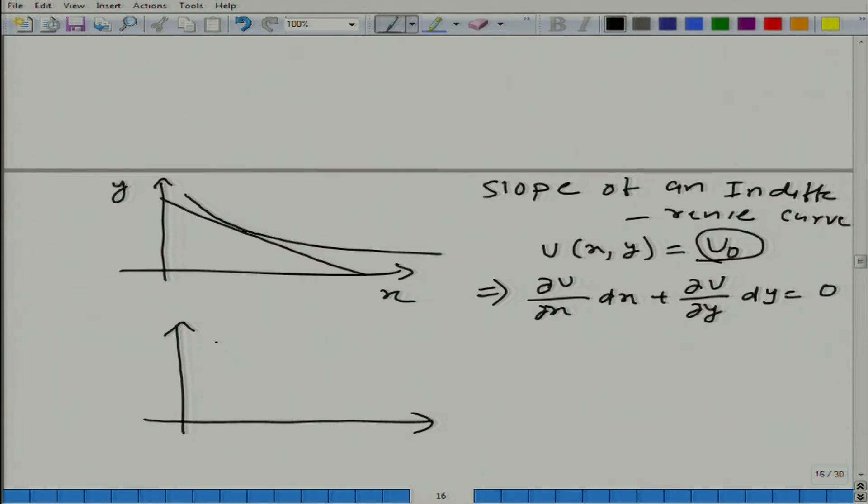Slope of indifference curve, we want to get at a point. Let us say we want to get at this point. What we can do is start at this point and pick any other point, let us say 1 and 2. How can we move from 1 to 2? What is happening? x is going up and y is coming down.